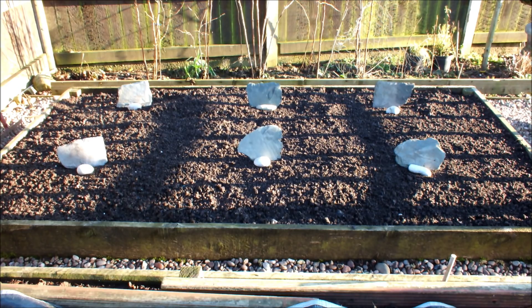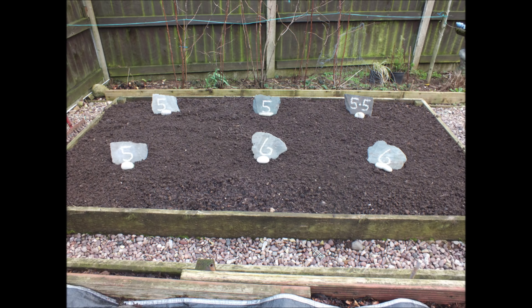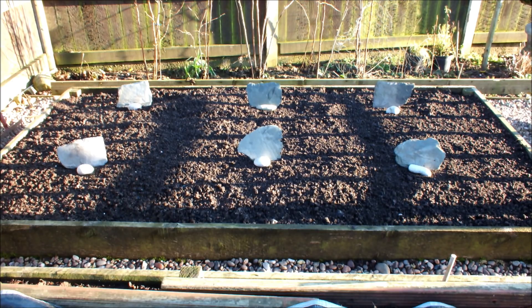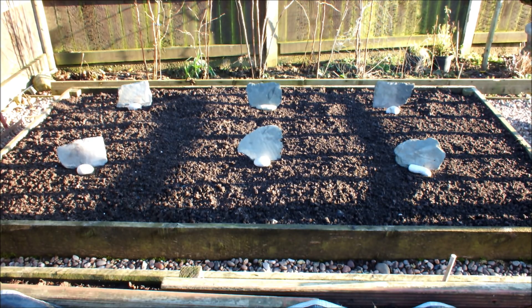A month ago I did a soil test on this raised bed and found the average pH by taking six readings and averaging them out. This raised bed's pH one month ago was averaging out at 5.5. That's acidic, and acidic is not bad, but I would rather it were closer to the 7 pH neutral. So I wanted to raise the pH of this bed and make it less acidic.